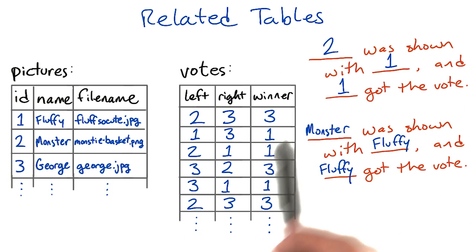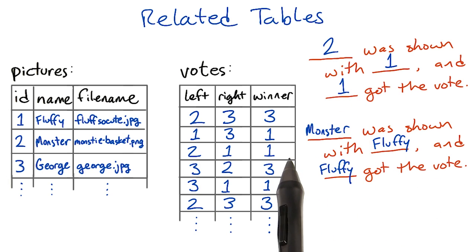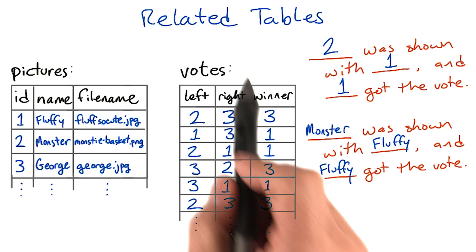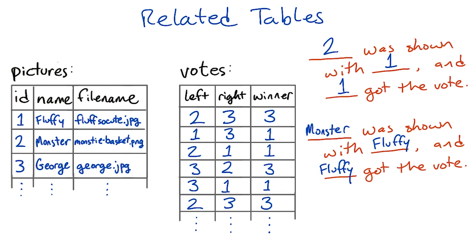This is the kind of sentence that this table represents. If we wanted sentences like 'Monster was shown with Fluffy, and Fluffy got the vote' instead of '2 was shown with 1, and 1 got the vote,' we would have to connect rows from this table with rows from that table. That's something we can do with a database query.